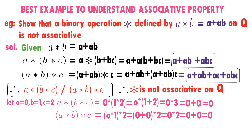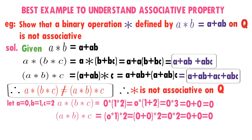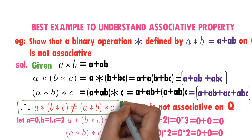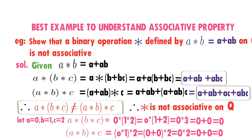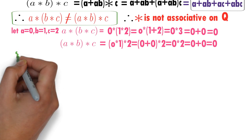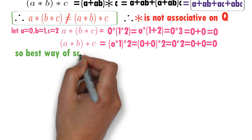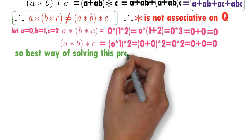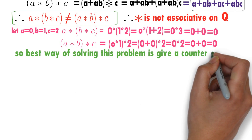So the statement we concluded above is not true for any three elements — there is a drawback to proving it in that method. Whenever star is not associative, you must give a counterexample. Don't prove in that general algebraic way. If star is not associative, give a specific example which does not satisfy the condition. The best way of solving this problem is to give a counterexample.